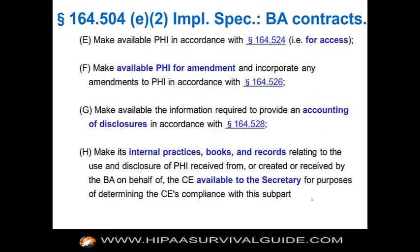Section 164.504(e)(2)(e) requires making PHI available in accordance with 164.524 — that's a patient's right to access PHI. Making PHI available for amendment — a patient's right to amend PHI. Making available the information required to provide an accounting of disclosures under 164.528. The business associate that manages PHI on behalf of a covered entity inherits all these requirements that are part of what we call the patient's bill of rights. Historically in the paper universe there weren't many requests for access, but that's quickly changing and many business associates will be caught unawares.